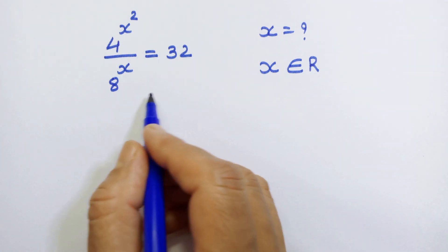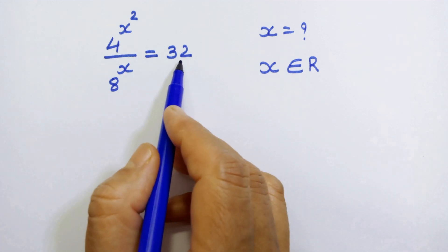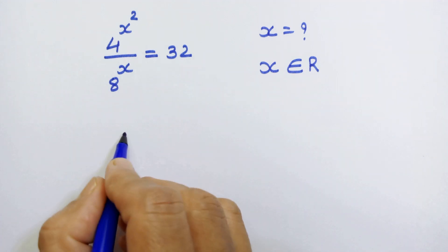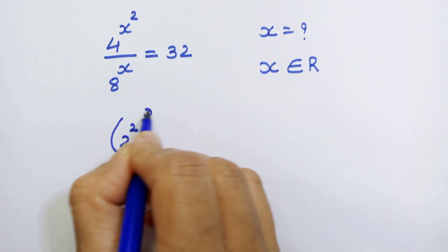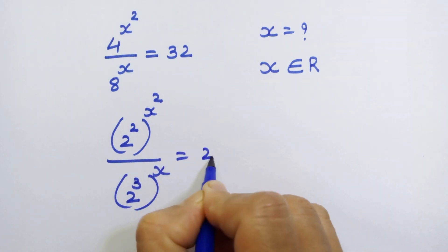It seems we can find the same base at both the sides. Here 4 is 2 square, 8 is 2 cube and 32 is 2 raised to 5. So here we can write 2 raised to 2 whole raised to x square upon 2 raised to 3 whole raised to x is equal to 2 raised to 5.